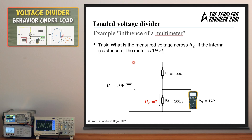Let's solve a small exercise. The task is to find the voltage measured across R2 using a multimeter with an internal resistance — a rather bad multimeter for the sake of this exercise — with an internal resistance of 1000 ohms. The source voltage is 10 volts. U2 is the parameter we are looking for, and the other values are given. Try to compute it yourselves, press pause now, and on the next slide I will give you the sample solution.